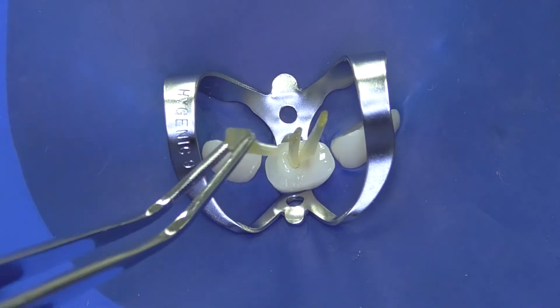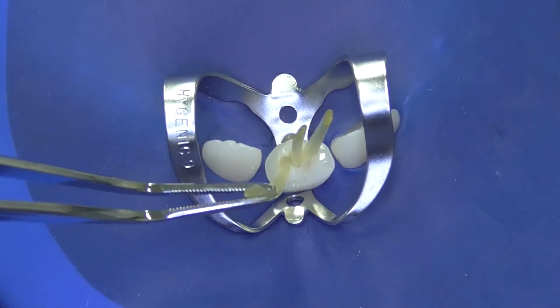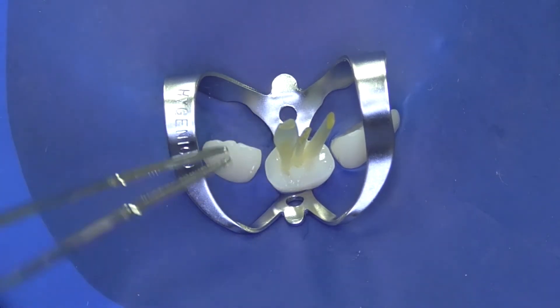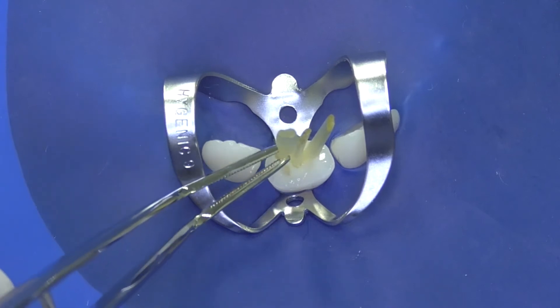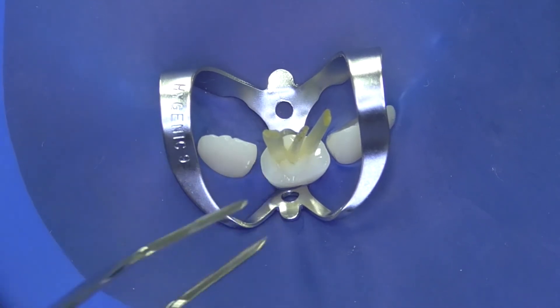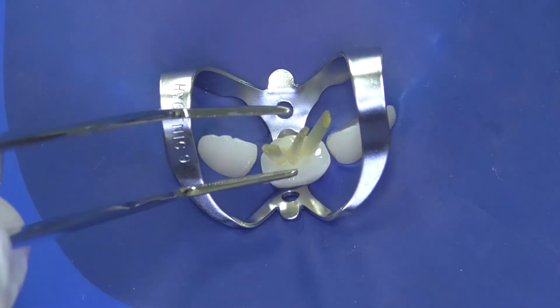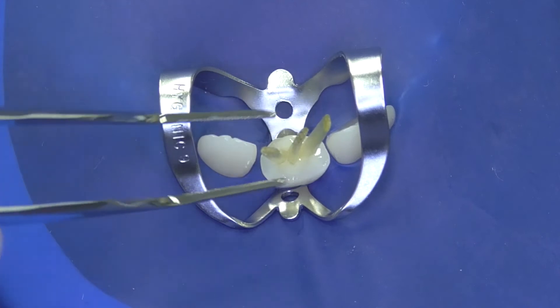Before we are starting light curing the cement and the post simultaneously, it is possible to bend the fibers to have better angulation to the direction of the coming core and the coming crown.